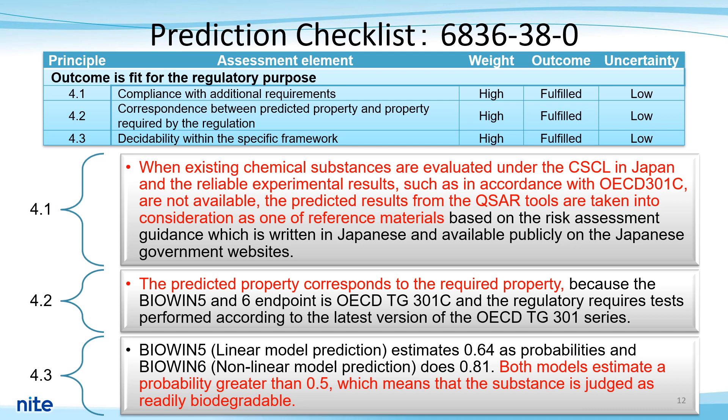About 4.2, especially when the regulation refers to a specific test guideline, this item ensures that the experimental results obtained according to the specified test guideline are included in the training set. Since the endpoints for BioWin 5 and 6 are OECD test guideline 301C, and the regulation requires that tests be performed according to the latest version of OECD test guideline 301C, the predicted properties correspond to the mandatory properties. Therefore, outcome was set to fulfilled and uncertainty to low.